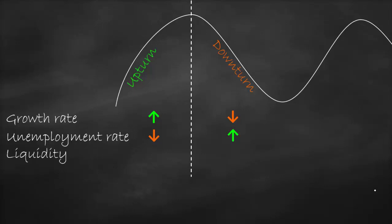Liquidity: since everyone is working, the economy is growing, companies are hiring more people and producing a lot. Therefore, we have a lot of liquidity in the economy. During downturn, people lose their jobs, companies are downsizing, they produce less, the economy is slowing down, and consequently liquidity is lower. Personal income during upturn is high because people work and get a high salary, while during the downturn personal income will decline.